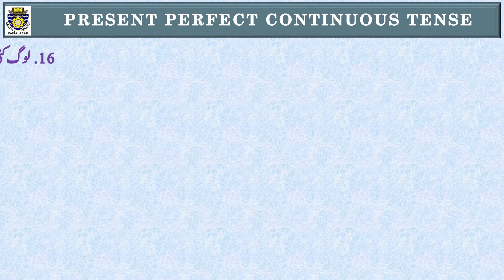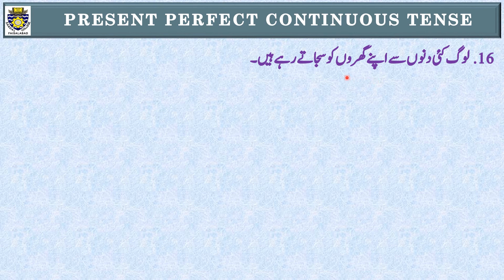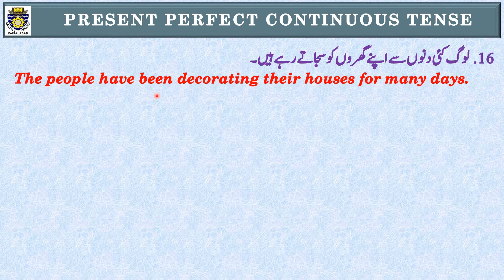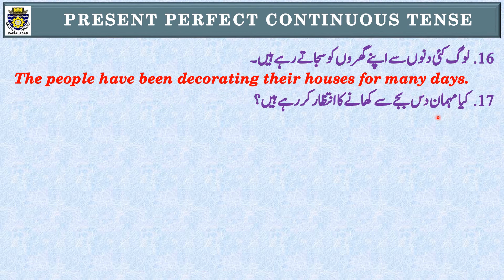Sentence 16: 'لوگ کئی دنوں سے اپنے گھروں کو سجاتے رہے ہیں۔' Identification: 'رہے ہیں' اور 'کئی دنوں سے' — Present Perfect Continuous Tense۔ Subject: 'لوگ' یعنی people — plural — have been۔ The people have been decorating their houses for many days.